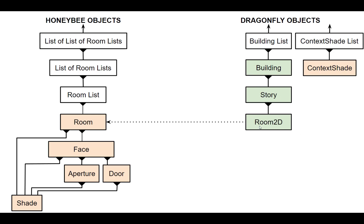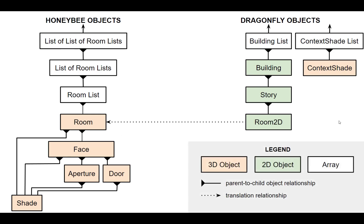One important thing to notice is that the finest level of detail within Dragonfly is just the room — there are no elements for faces, apertures, or doors. All these get represented in a much simpler manner with a simple set of rules. While Dragonfly still has the ability to represent detailed 3D geometry through context shading, it really capitalizes on what can be done in 2D to make things much easier to manage.